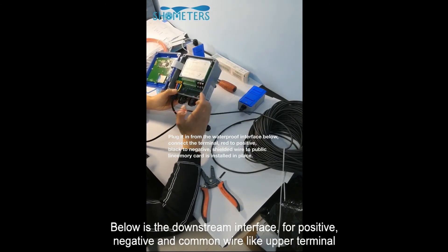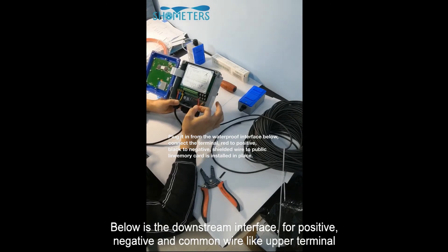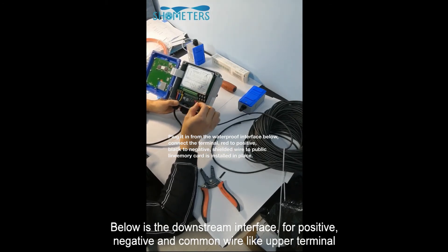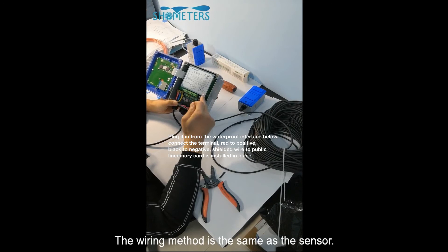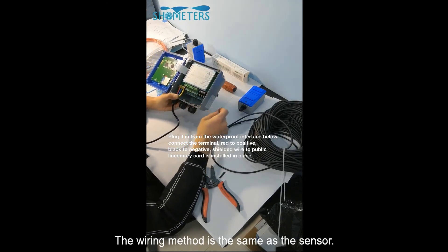Below is the downstream interface for positive pole, negative, and common wire, like the upper terminal. The wiring method is the same as the sensor.